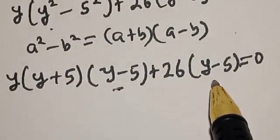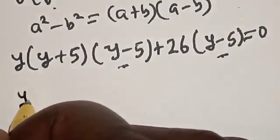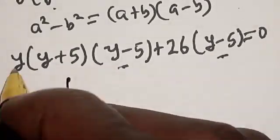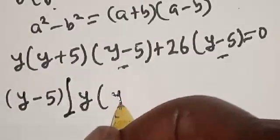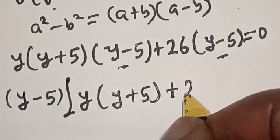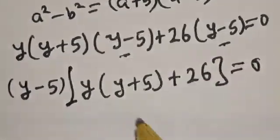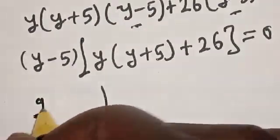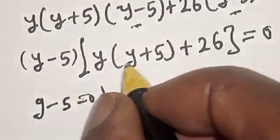We can see that (y minus 5) is common in both terms. Bringing it out: (y minus 5) times [y(y plus 5) plus 26] equals 0. Now there are two cases.